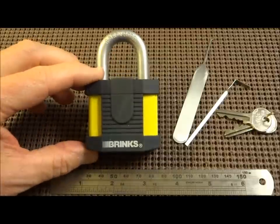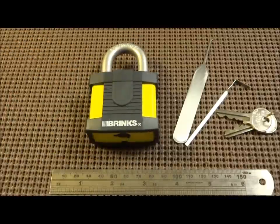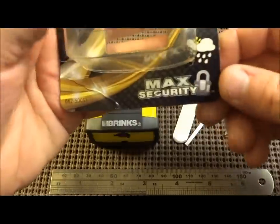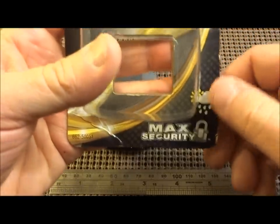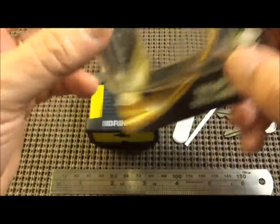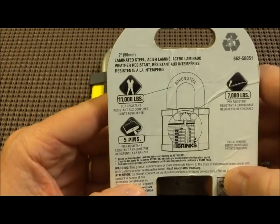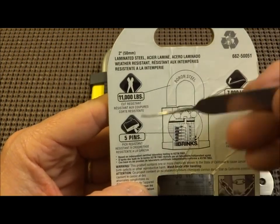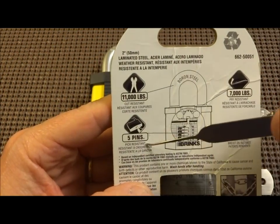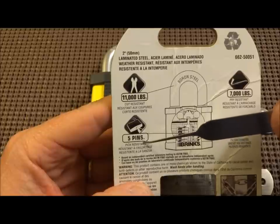This is a Brinks 50 millimeter high security. In fact, I have the package here. They call it a max security weatherproof lock. I don't know what max security is, but on the back they give us a little more information. They tell us first of all it's five pins and they're pick resistant, so I'm hoping they're security pins.